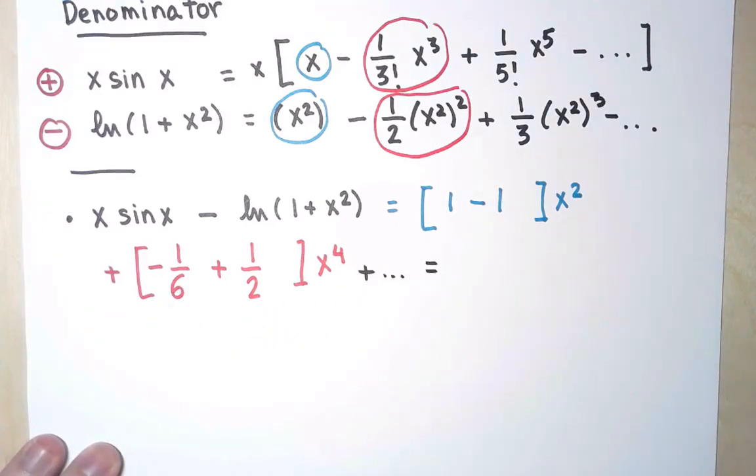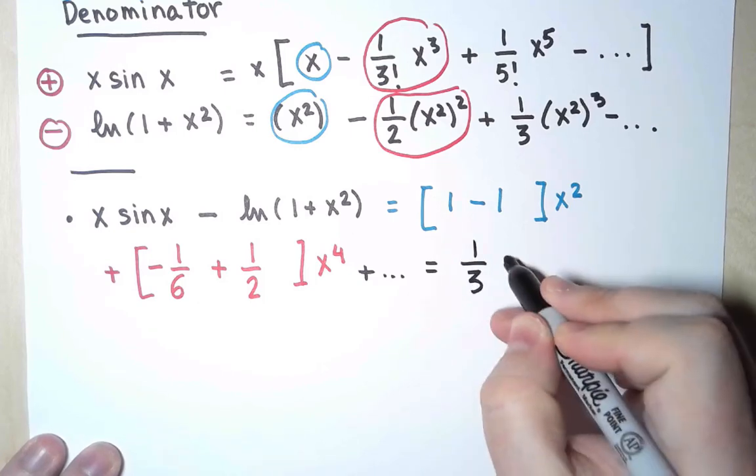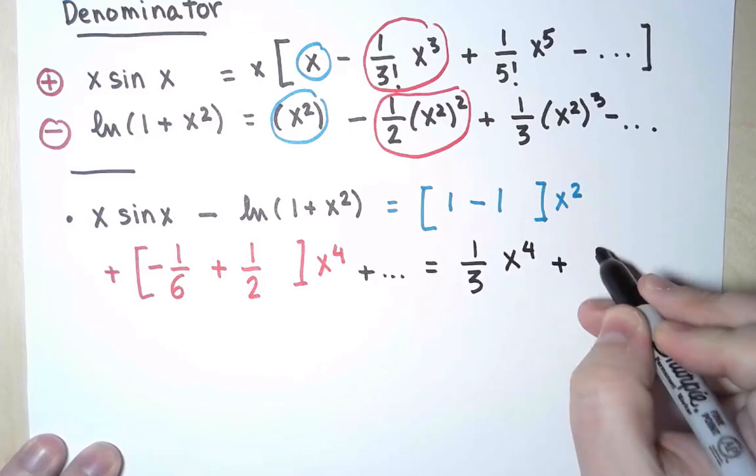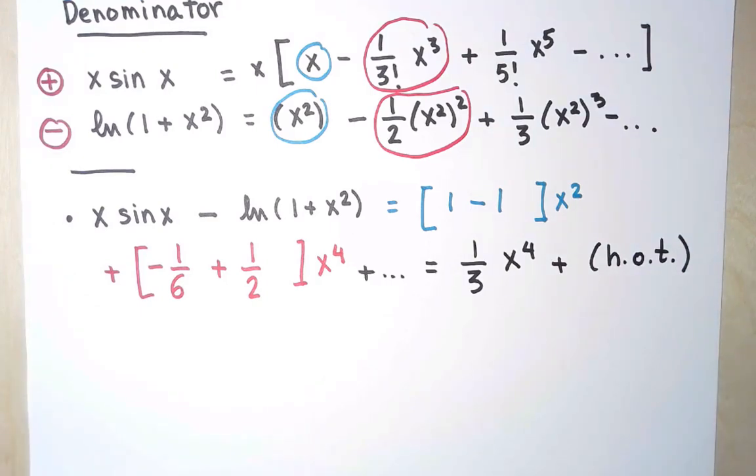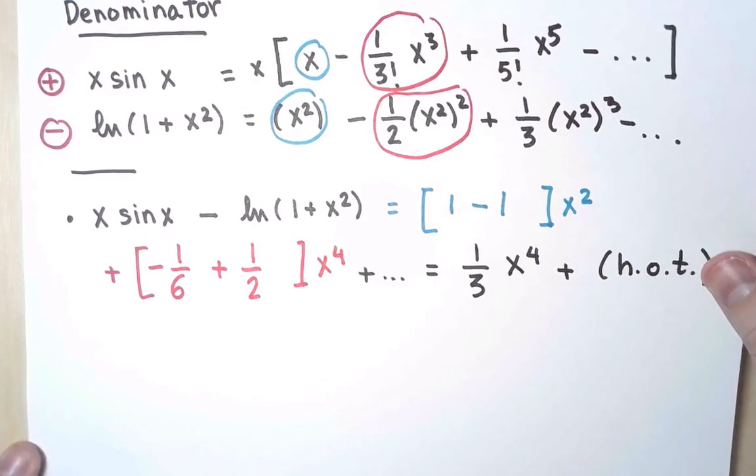And this is 1/3. So I have minus 1 over 6, which is -1/6 + 1/2 = 1/3, of x⁴, and like before, plus higher-order terms. So I've done it. I have now the numerator and the denominator as a power series, just the smallest term. That's going to be enough. Let's finish computing this limit.